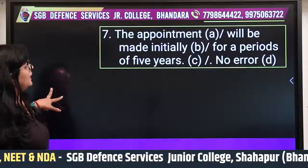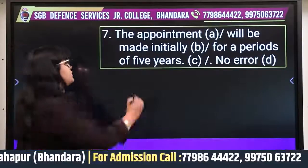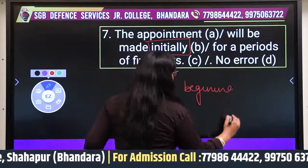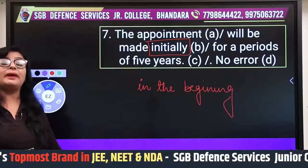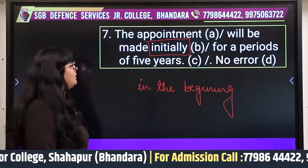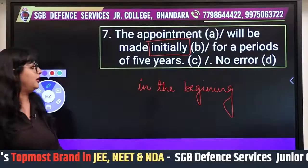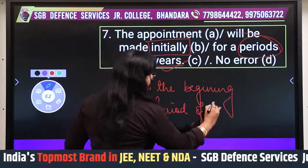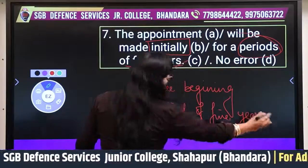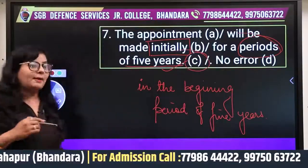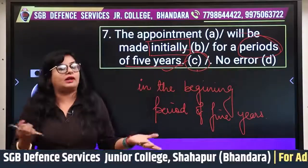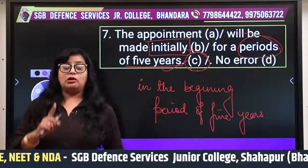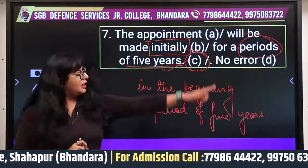Question seven: 'The appointment will be made initially for a period of five years.' Initially means 'in the beginning.' Now, 'five years' is correct. The wrong part is 'periods' — you cannot use both 'periods' and 'years' together. The correct phrase is 'a period of five years.' So the error is in the use of 'periods.' Whether you chose B or C for the error, logically it is 'periods' that is wrong.